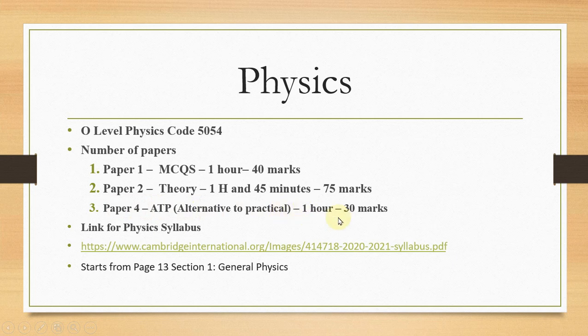Paper 4 is known as ATP, Alternative to Practical, time for this is one hour, 30 marks. This paper is not practical but on paper you will attempt questions totally related to practicals. Students will be shown conducting some practical in pictures and you explain different questions. The syllabus contents can be found on page 13, section 1 beginning with General Physics.